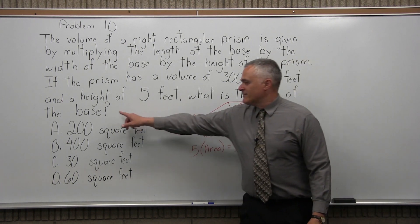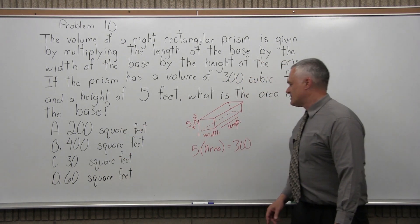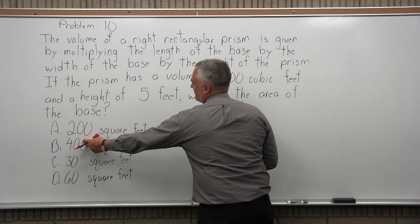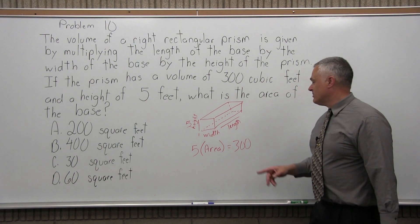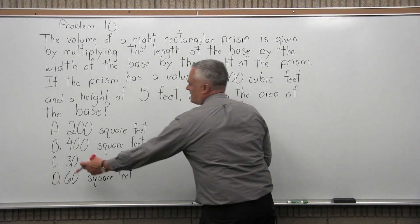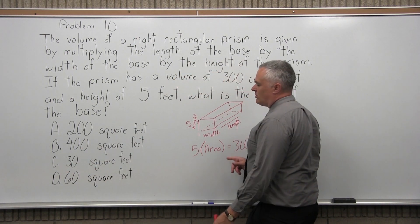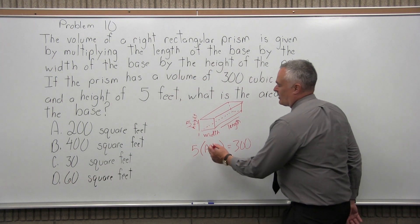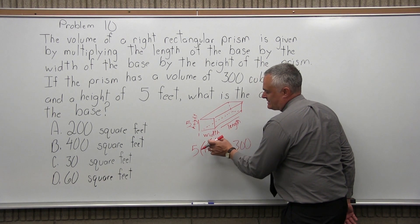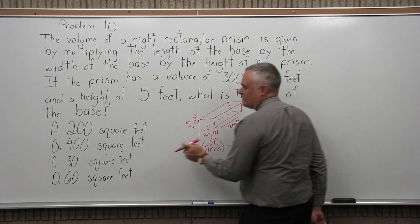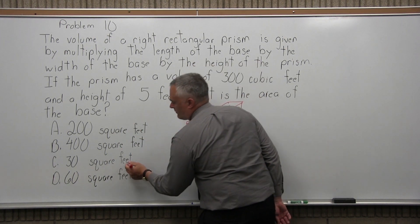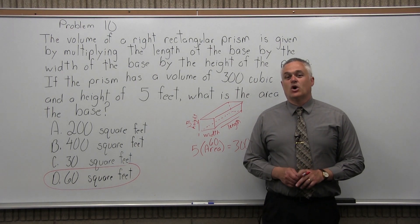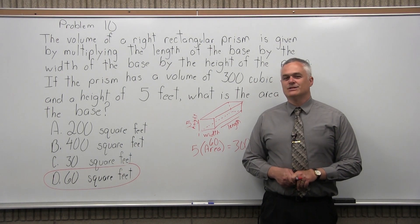What they're saying is 5 times one of these answers is 300. Well, 5 times 200 is 1,000. 5 times 400 is 2,000. Way too big. We're trying to make it come out to 300. 5 times 30 is 150. Oh, look, 5 times 60 is 300. So if the area of that base is 60, 5 times 60 gives you that total 300 cubic foot volume. So the answer for number 10 is option D, 60 square feet.